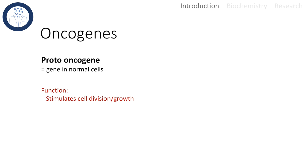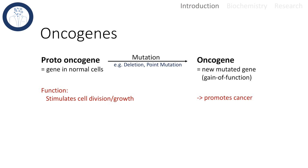Starting with oncogenes, we first have to introduce their normal variant in healthy cells. Cells that have the potential to become oncogenes after a mutation event are first called proto-oncogenes. In a normal healthy cell, these proto-oncogenes stimulate cell division and cell growth, but once mutated they can become the dangerous oncogenes that promote cancer.